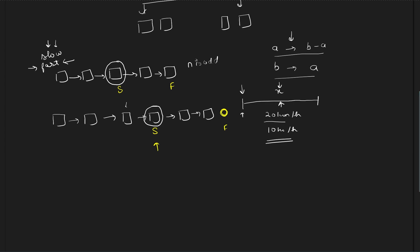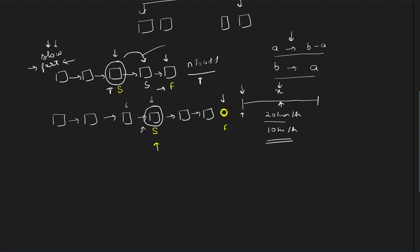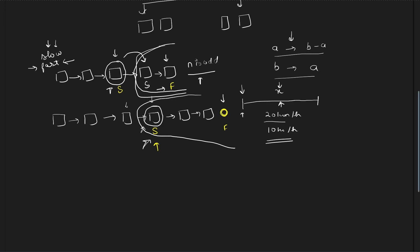When n is even, the slow pointer lands on the second of the two middle nodes, which becomes the first node of the second half. By checking if fast is not null after the while loop, we can increment slow in the odd case so that in both cases slow points to the first node of the second half of the linked list.